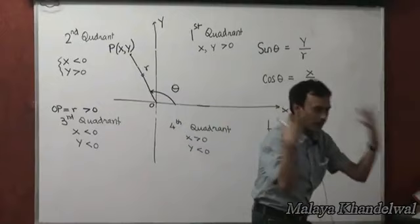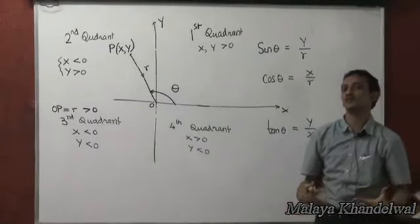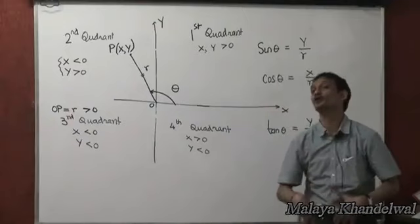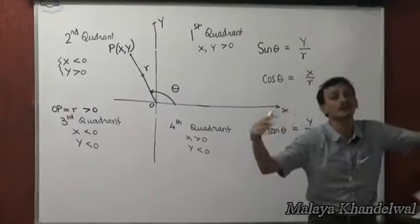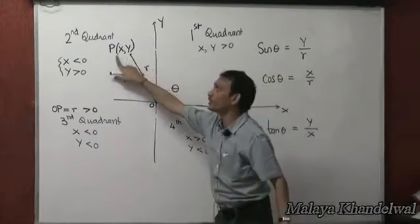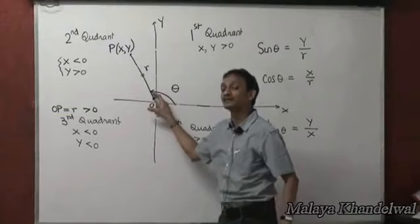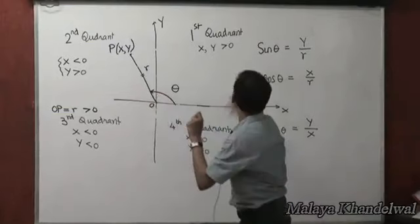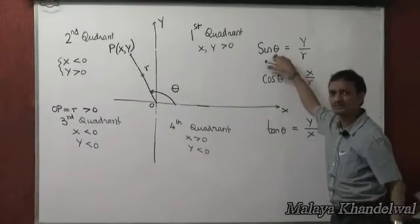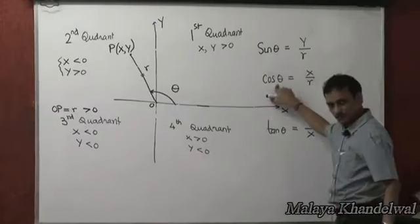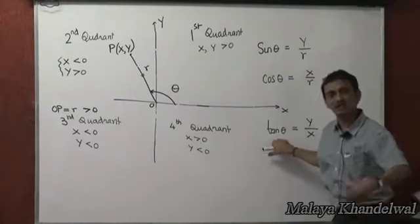From now on, you are not going to look at trigonometric ratios from the perspective of a right-angle triangle or an acute angle. Theta can be acute, obtuse, or of any value. Depending on the coordinates of point P, the trigonometric ratios of the corresponding angle theta are defined accordingly. Cosec theta = 1/sin theta, sec theta = 1/cos theta, and cot theta = 1/tan theta.